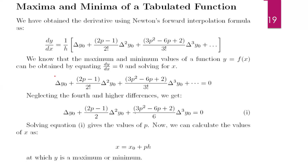Suppose there are more than one critical points. If equation one gives more than one critical point, we apply the second condition: take the second order derivative. That means differentiate this equation with respect to x, then we get the second order derivative with respect to x.